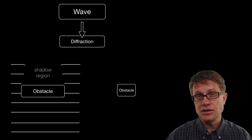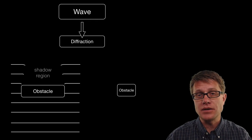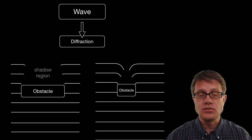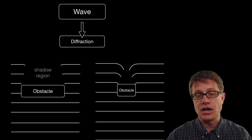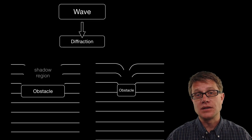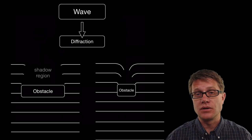Watch what happens if we decrease the size of the obstacle. So now the size of the obstacle is around the size of the waves, we decrease the size of that shadow region. And so by matching the obstacle or the opening to the wavelength we can get more diffraction.